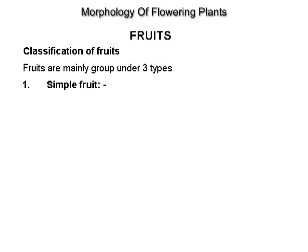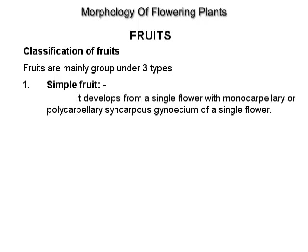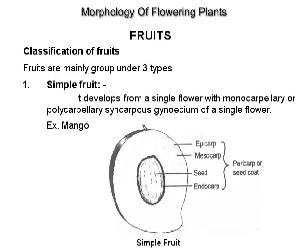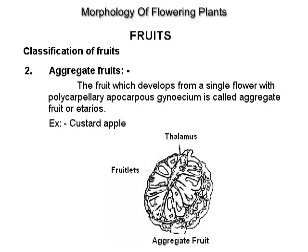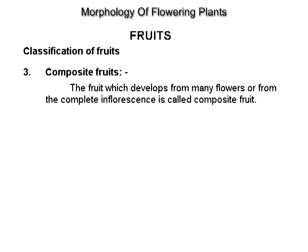Classification of fruits. Fruits are mainly grouped into three types. Simple fruit: develops from a single flower with monocarpellary or polycarpellary syncarpous gynoecium. Example: mango. Aggregate fruit: develops from a single flower with polycarpellary apocarpous gynoecium; also called etaerio. Example: custard apple. Composite fruit: develops from many flowers or from a complete inflorescence. Examples: pineapple and jackfruit.